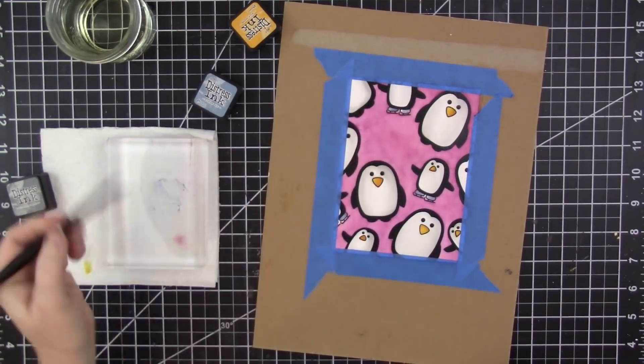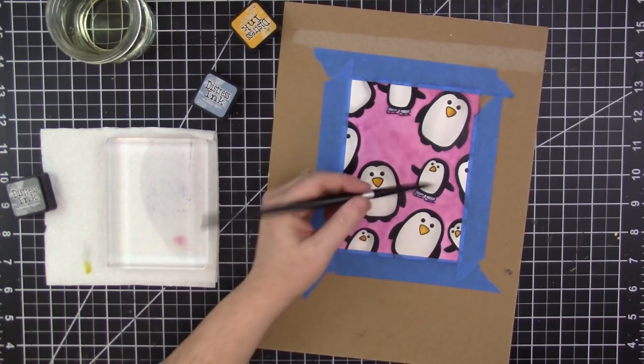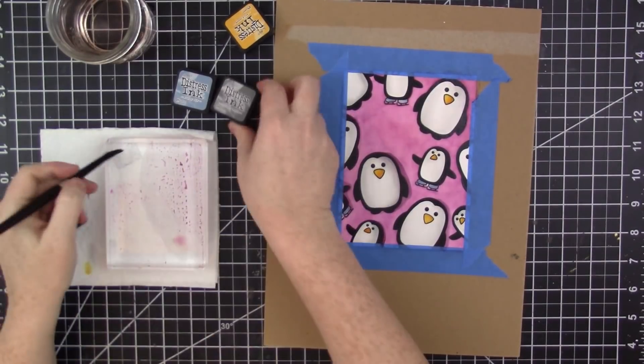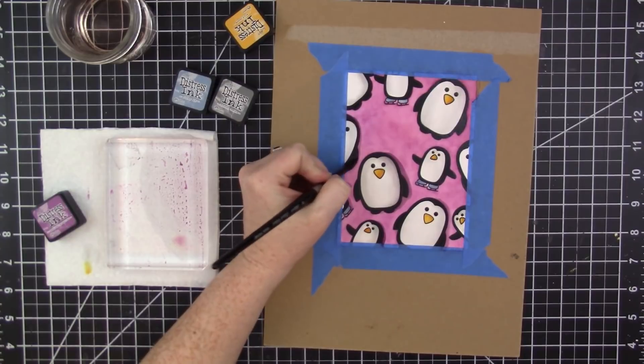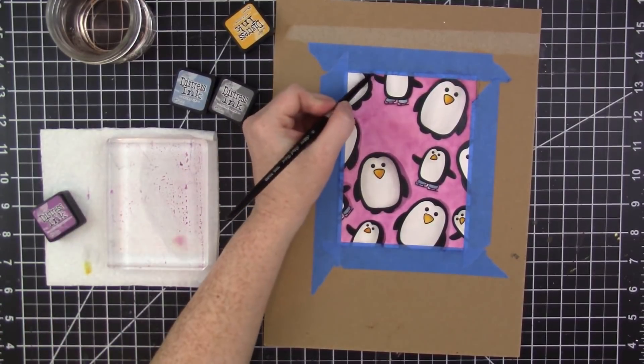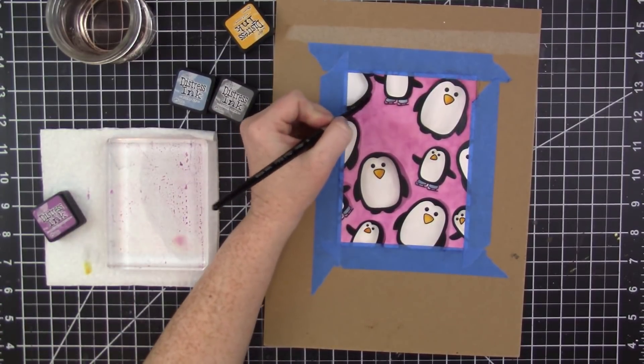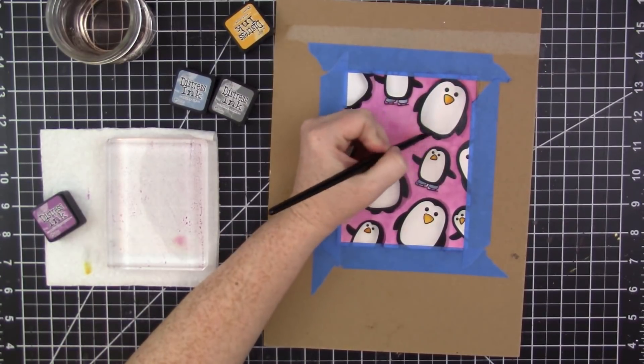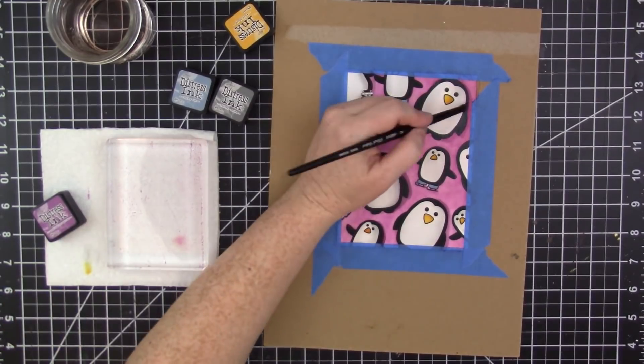I'll smoosh the color Stormy Sky onto my clear block and paint in their little ice skates. And then what I'm going to do is I'm going to give each of the penguins a cast shadow. So I'll mix some of the Hickory Smoke with the Seedless Preserves and I just paint a dark outline just outside the right side of each penguin.